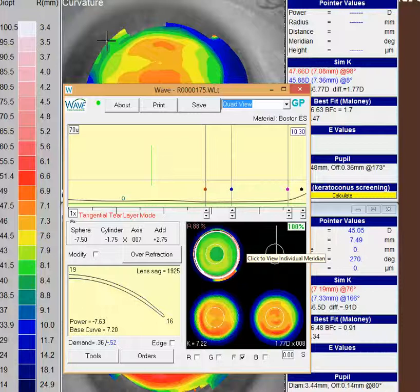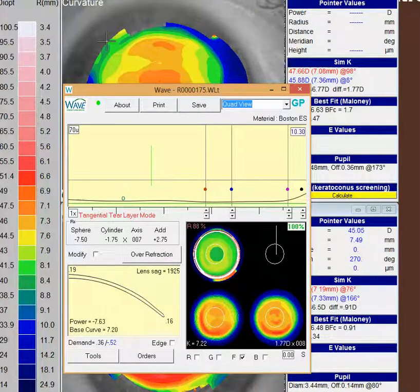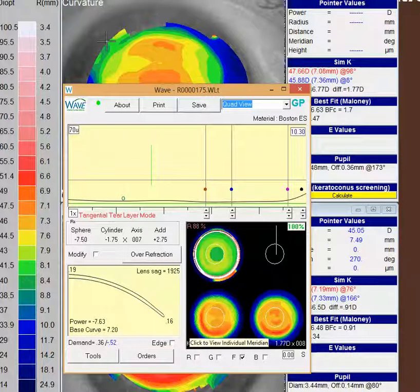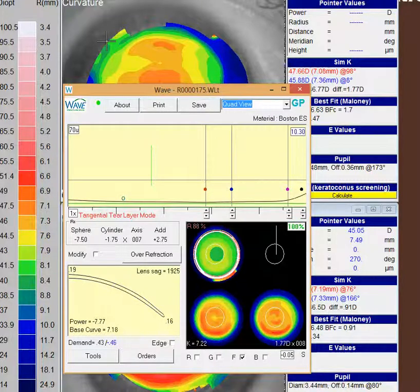The other thing you can do is sometimes if you put a little more asphericity out here in the peripheral part, you'll notice what happens with this base curve here. If you look at the back surface of this contact lens compared to the front surface of the topography, if we flip over here, just put a little bit in there, notice that all of a sudden it looks very similar.